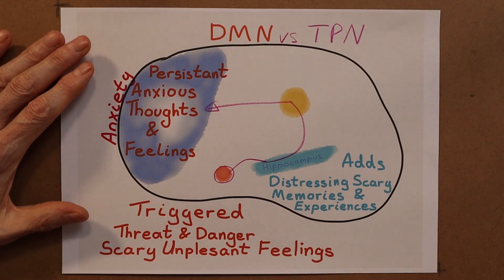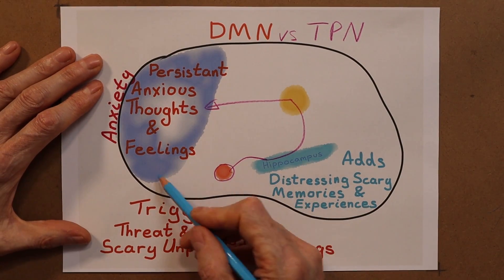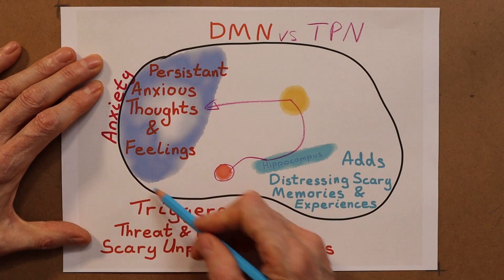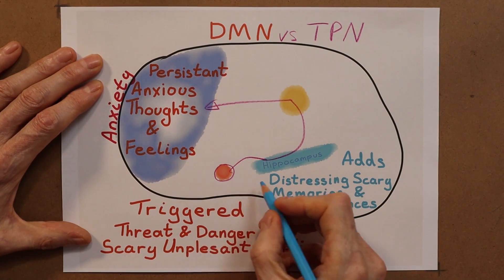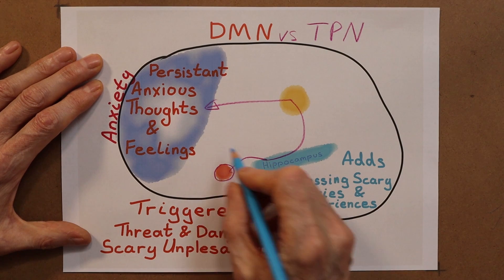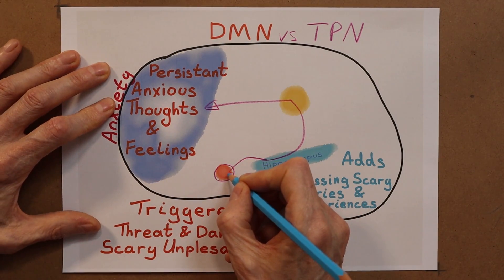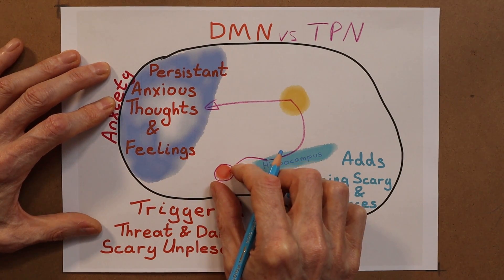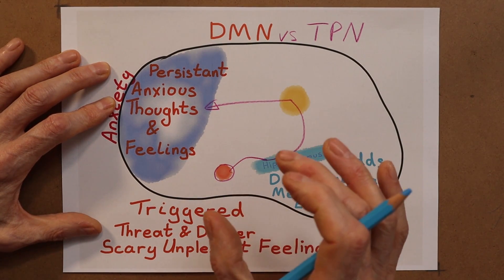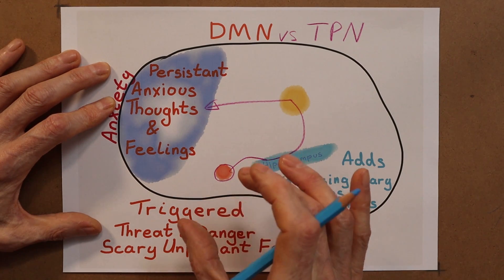I want to quickly return to the previous diagram. In addition to working on the default mode network overall, I'll subsequently show you techniques to work on individual components of this network. There are additional techniques we can bring to bear on the amygdala — we can change the software programming in the amygdala so it is less triggered. With brain training you can actually shrink an enlarged amygdala.